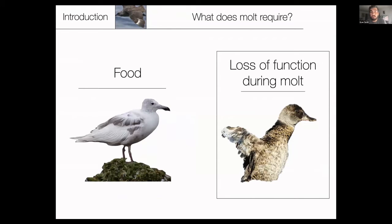What does molt require? Molt requires food and resources. Birds need to eat food above their baseline energy consumption rate to grow feathers — they're basically putting material into these feathers. It also requires that birds can tolerate the loss of function of a feather during molt. This ruddy duck is molting all of its wing feathers at once, so it is losing flight. Not all birds do that, but at least the feather being molted falls out, and a new feather grows in its place, so there is some functional loss while molt is happening.